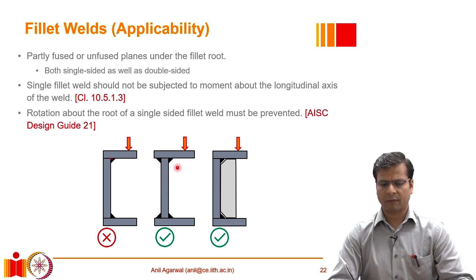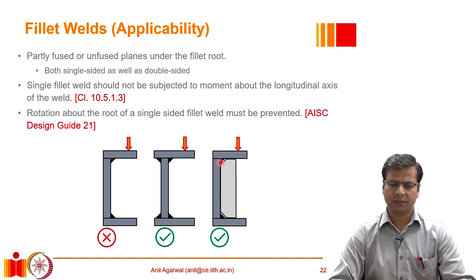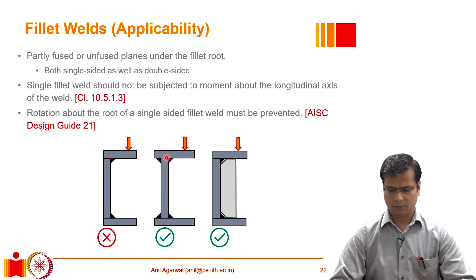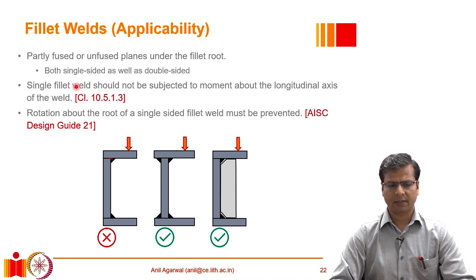This can be prevented by one of two ways: either provide stiffeners — if welded to the flanges, the stiffeners transfer the load directly without introducing bending moment to the weld — or provide double-sided welds, which offer some rigidity. With double-sided welds, there is a decent moment arm available, so the stress concentration at the root is minimized. IS 800 specifically states that a single fillet weld should not be subjected to movement about the longitudinal axis of the weld. The American design guide similarly specifies that rotation about the root of a single-sided fillet weld must be prevented.